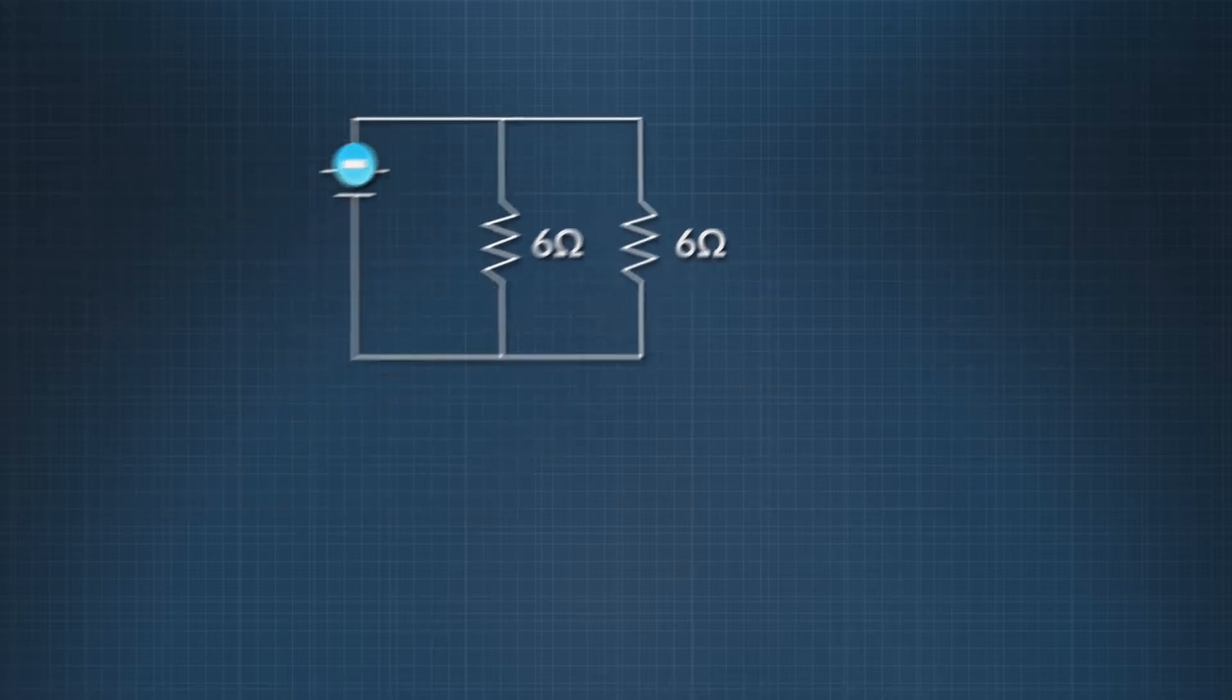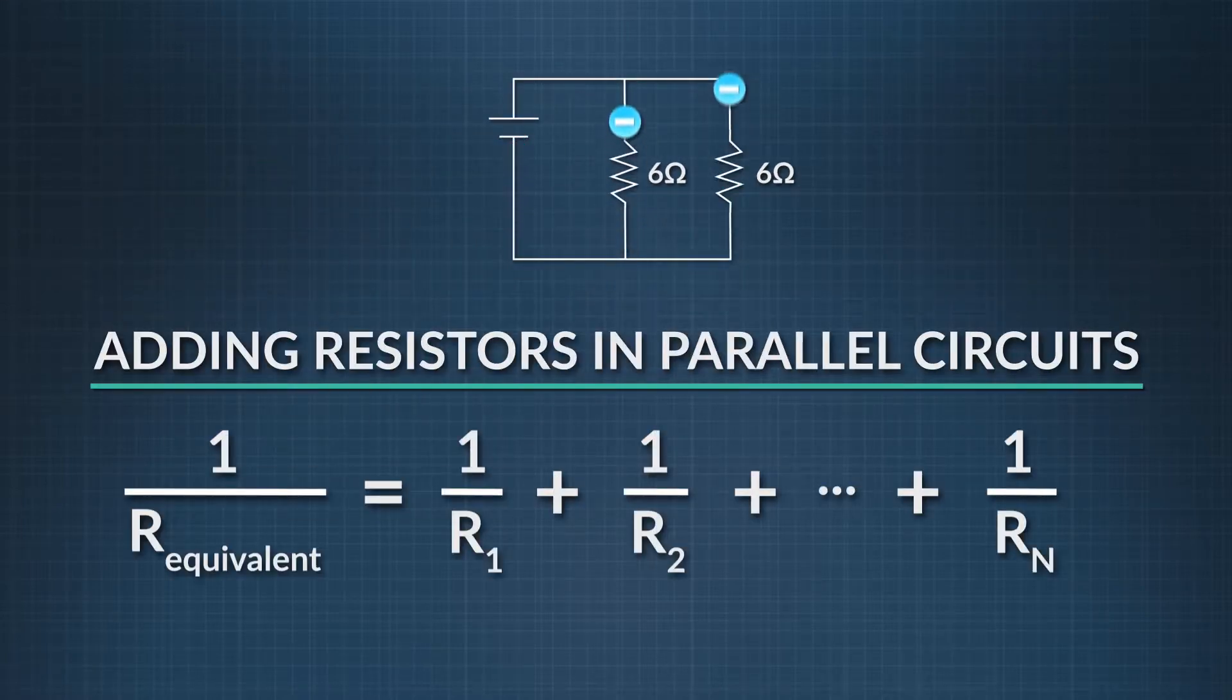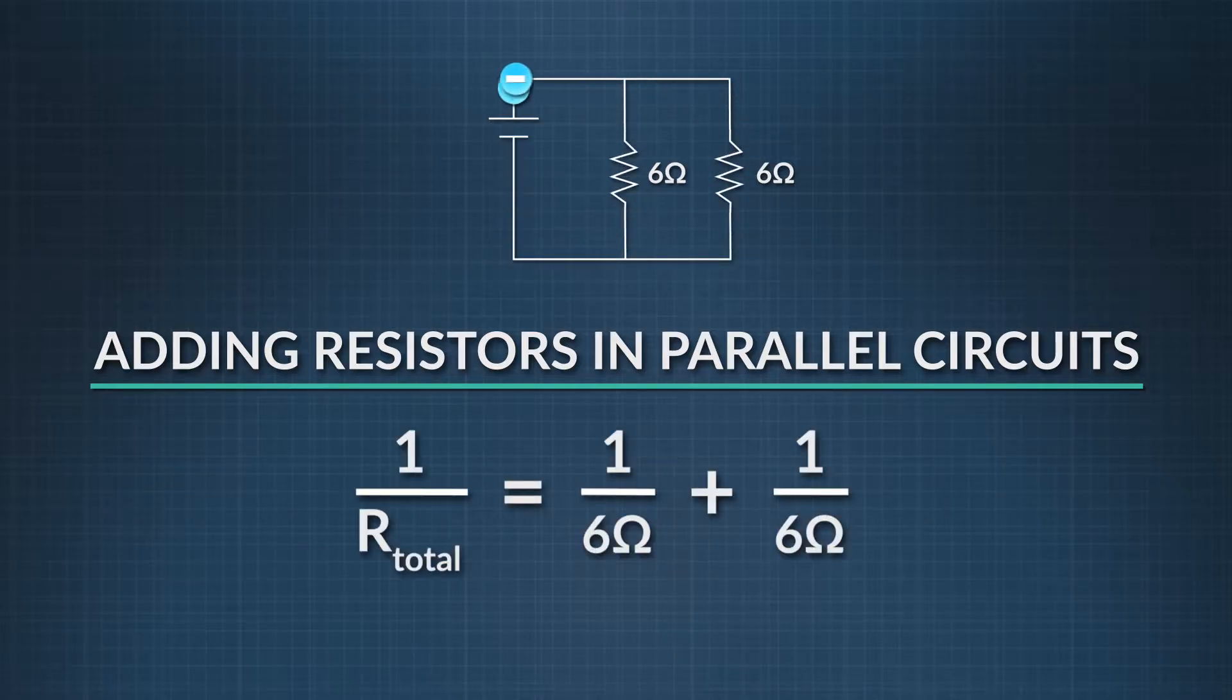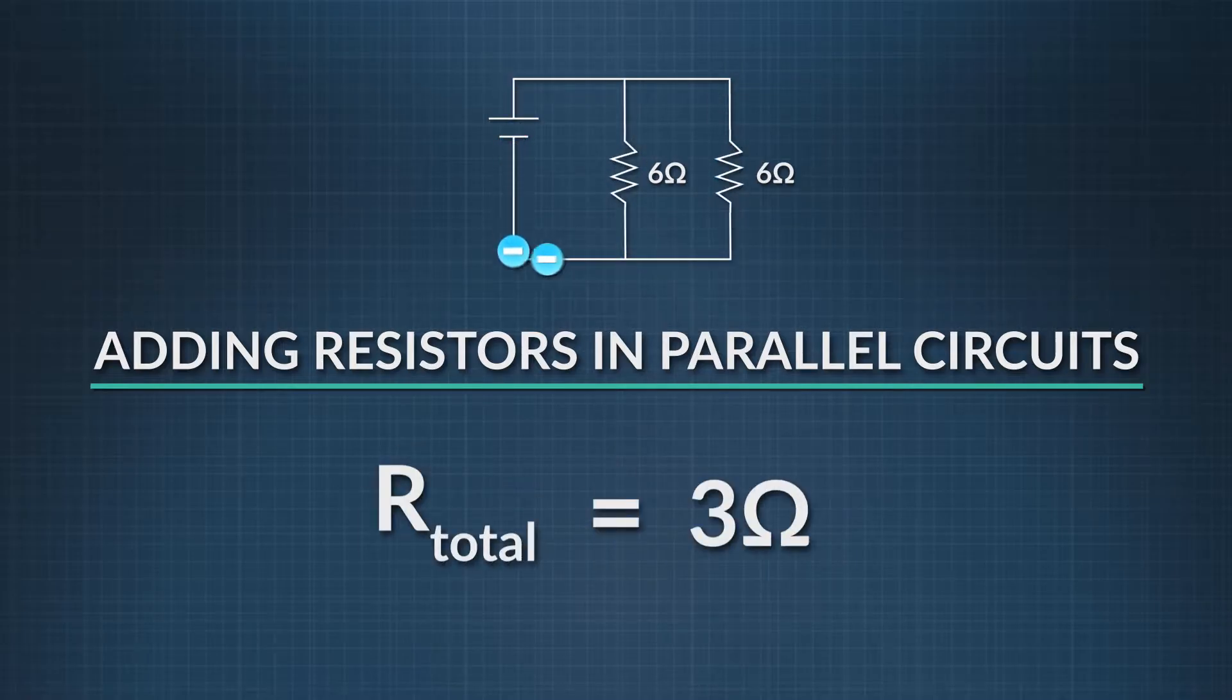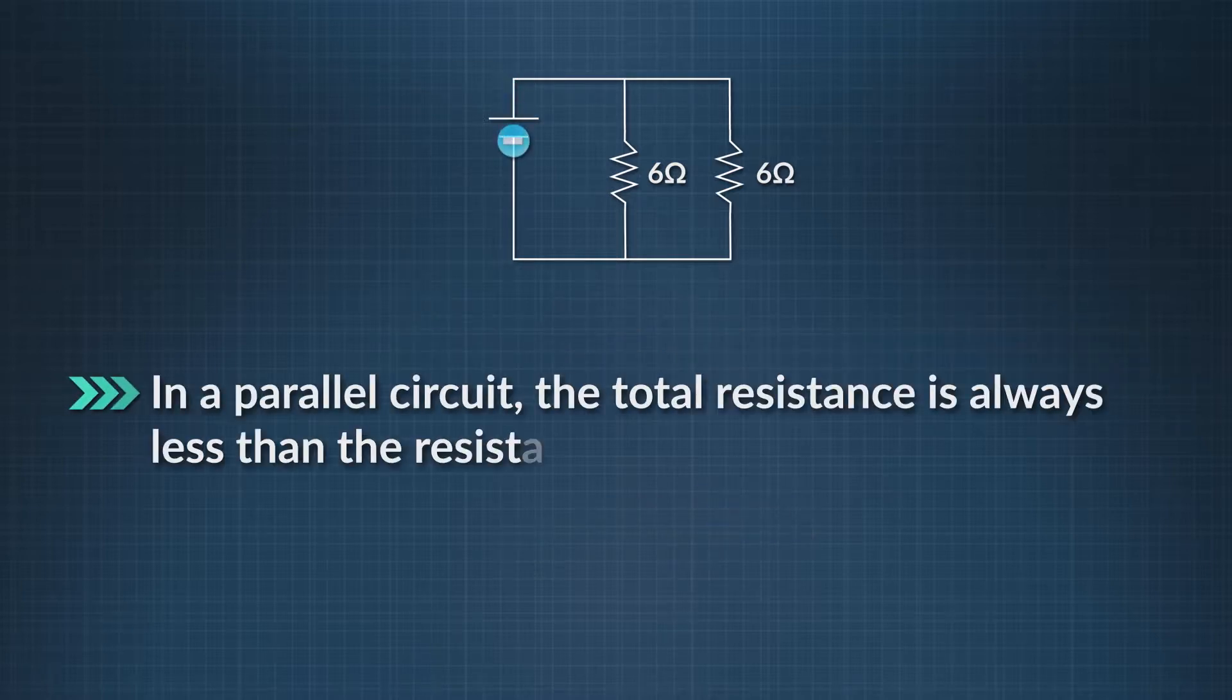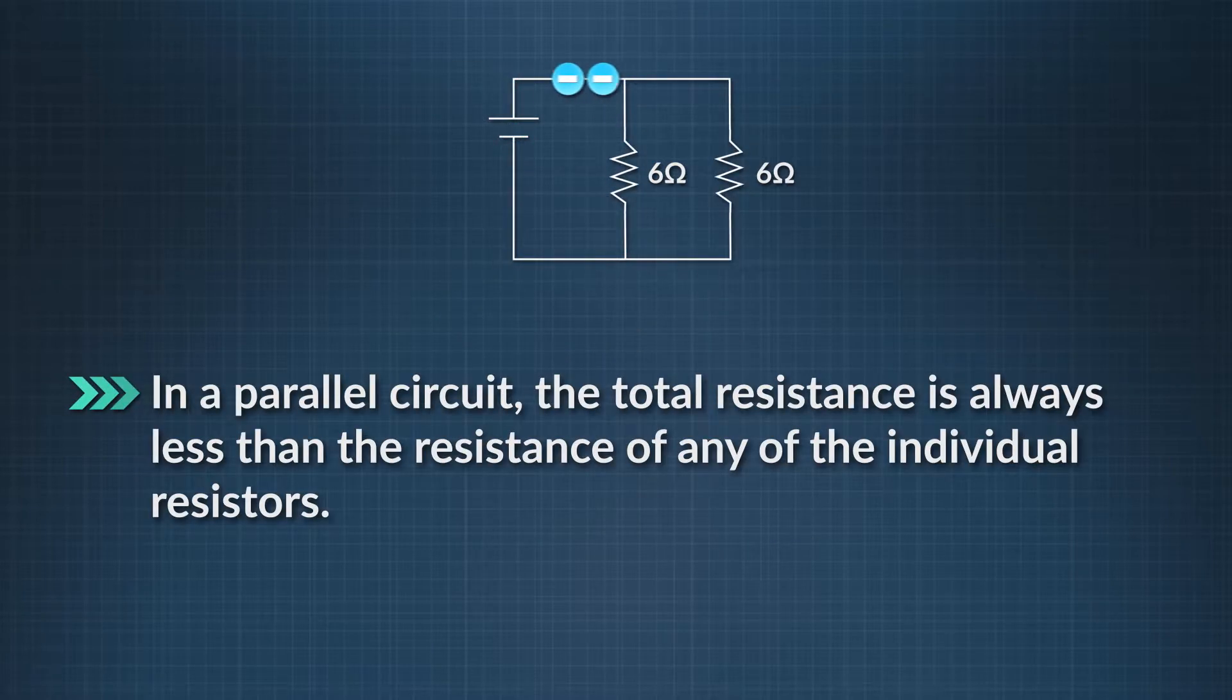When working with parallel circuits, we can add resistors like this: one over the equivalent circuit resistance equals one over the first resistor's resistance, plus one over the second resistor's resistance, and so on, up through the last resistor. So for this circuit, one over the total resistance equals one over 6 ohms plus one over 6 ohms. That totals 3 ohms, and that's the total equivalent resistance of all the resistors in this circuit. So remember, the total resistance is less than any of the individual resistor values.